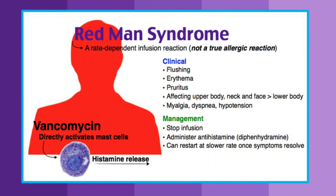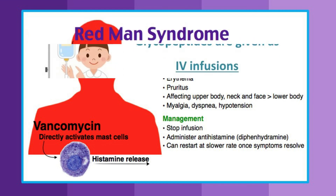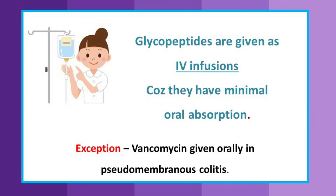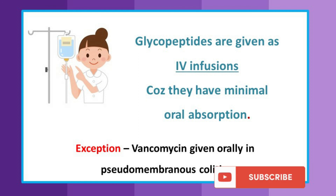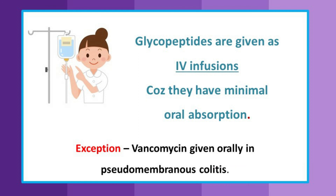Red man syndrome is a reaction that occurs from rapid infusion, leading to upper body flushing, rashes, and other symptoms — typically seen with vancomycin. Glycopeptides are usually given as IV infusions because they have minimal oral absorption and are large hydrophilic molecules that cannot penetrate lipid membranes. However, there is an exception: vancomycin can be given orally in pseudomembranous colitis.